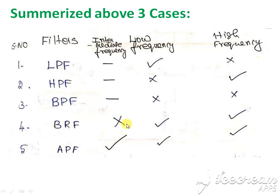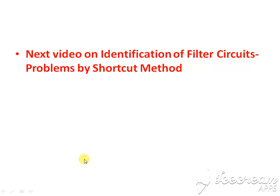If both low pass and high pass are allowed but the intermediate frequency is rejected, the circuit is called a band reject filter. If all three cases are allowed, the filter circuit is called an all pass filter. The next video will cover identification problems using this shortcut method. Thank you.